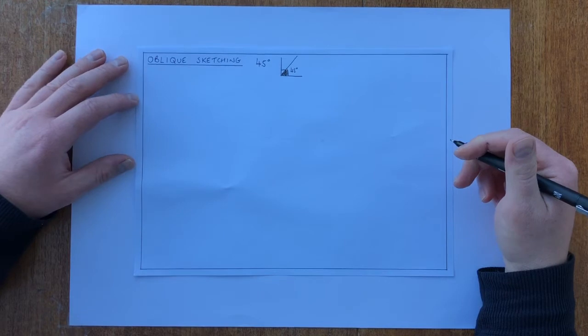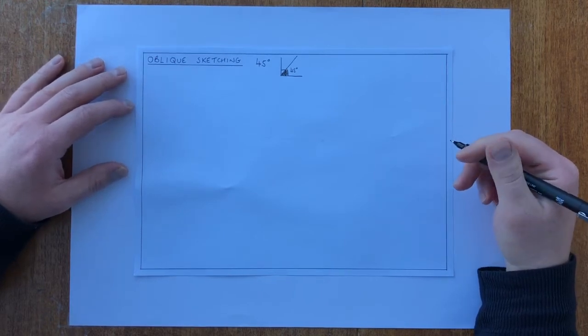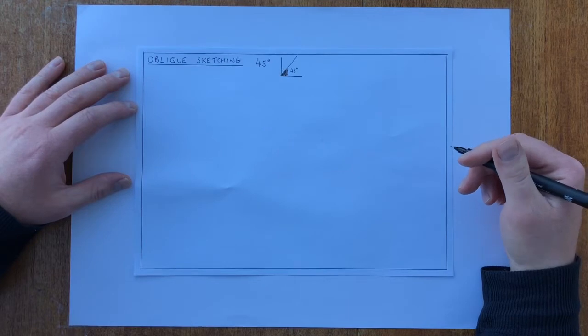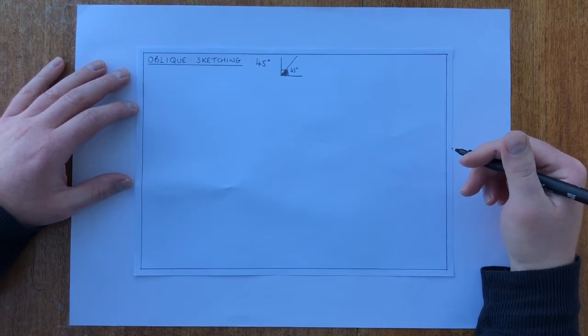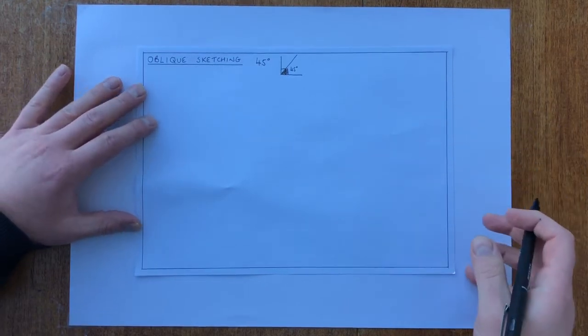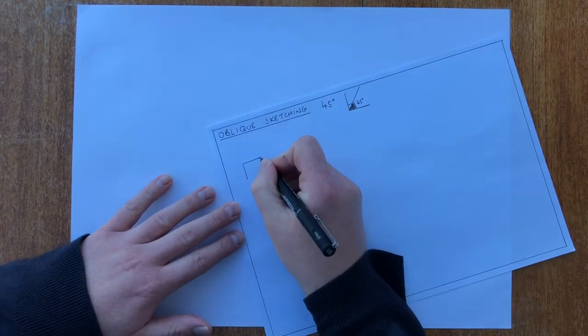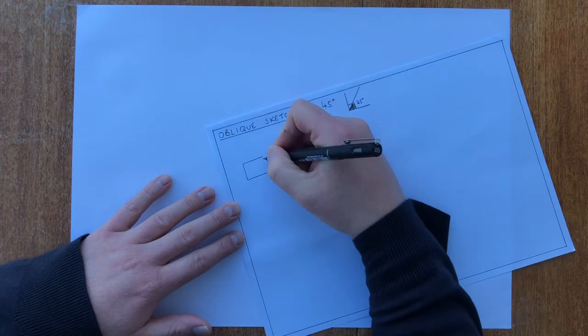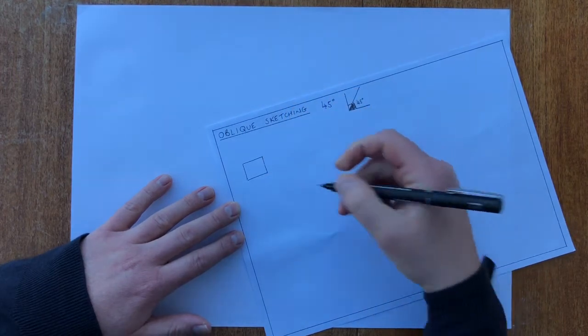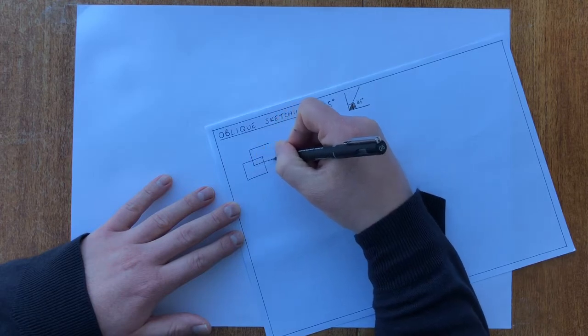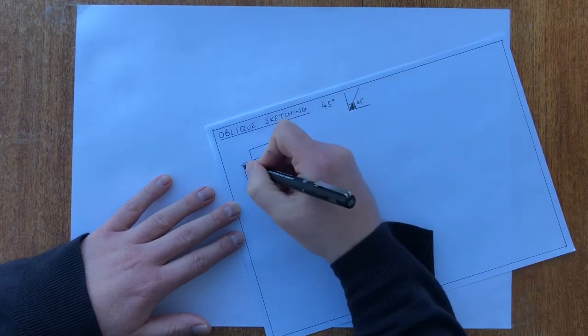With this technique many of the pupils when they come up from primary school can actually already do it. If I ask a pupil can you draw something in 3D, many of them will draw something like this. They'll start by drawing a square or a rectangle shape, then draw one behind it and join up the corners.